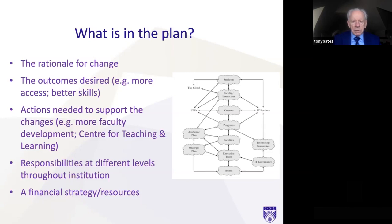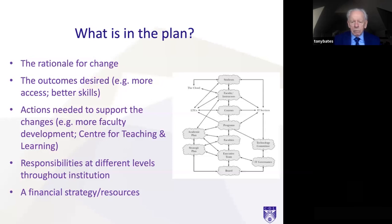Thirdly, you need to have the actions needed to support the changes — more faculty development, a good center for teaching and learning, and so on. You need to set responsibilities for implementing the plan at different levels throughout the institution. Every level, right through from students to the board of the institution, has some role to play. And you need a financial strategy and a set of resources to support that.